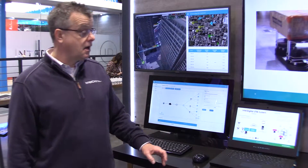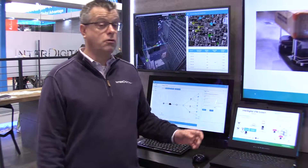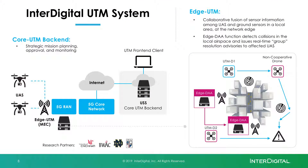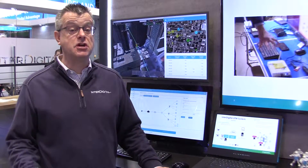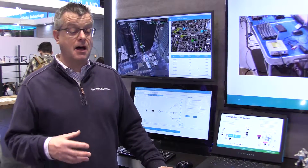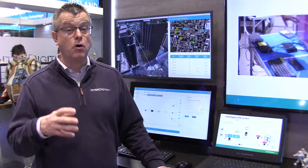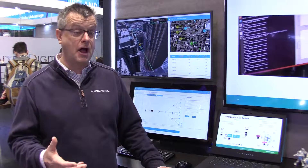We're demonstrating a drone traffic management system, called UTM for short. This system has two components. It has a core UTM back-end component, which runs in the cloud. The core UTM is responsible for strategic mission planning — that's about approving flight paths before the drones are flying.